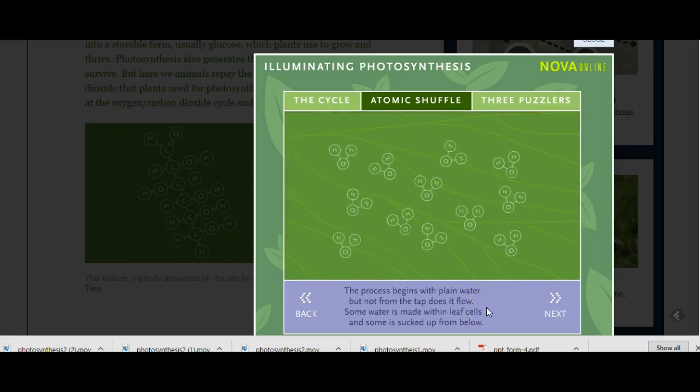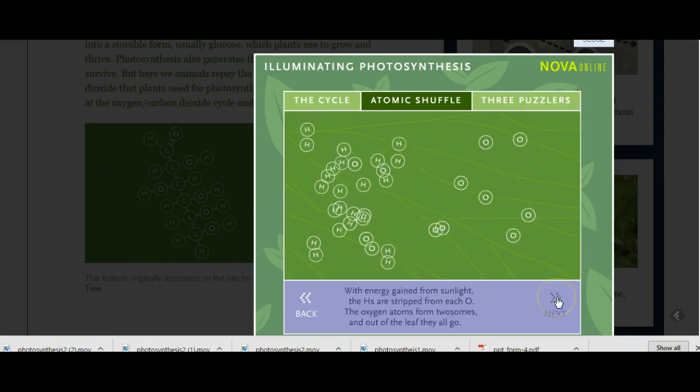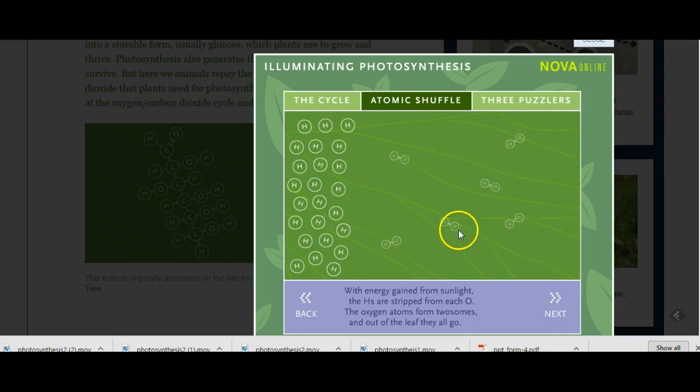So the plant takes in water. It also absorbs sunlight. It uses the energy from the sunlight to break these water molecules apart. The oxygens, when they're pulled away from the hydrogens, go into the atmosphere.